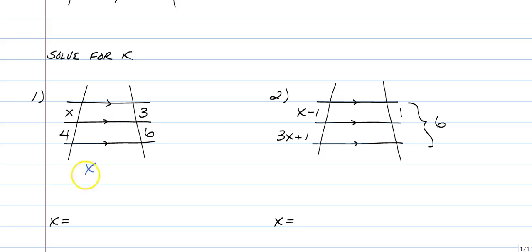So for number one, I gave you a hint of this one already. I would do X over four is equal to three over six. And once I cross-multiplied and solved for X, I would get X equals two. So maybe you got the exact same thing. If you did, great job.